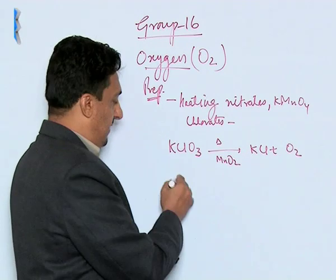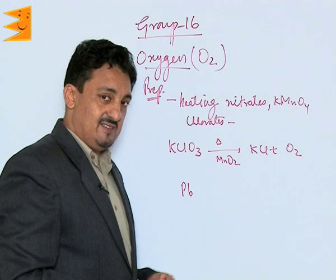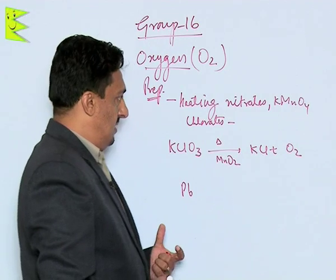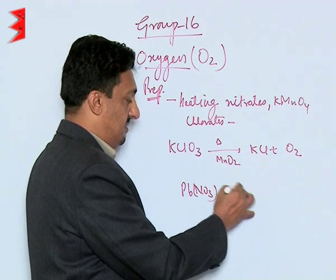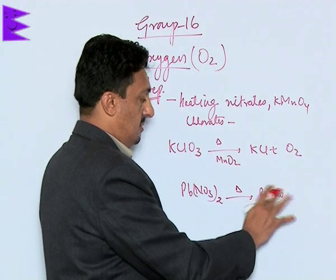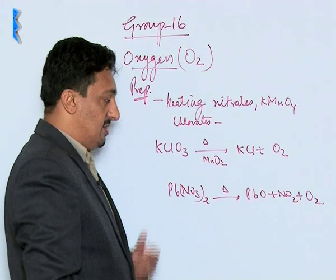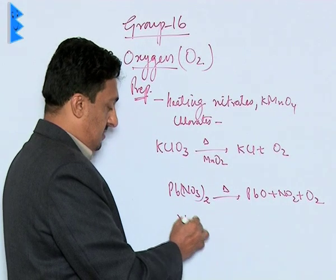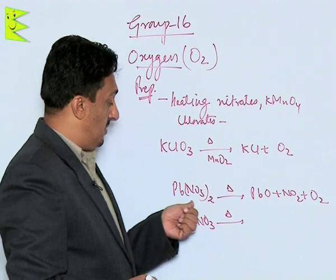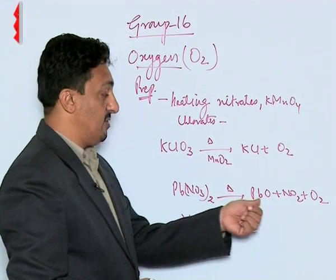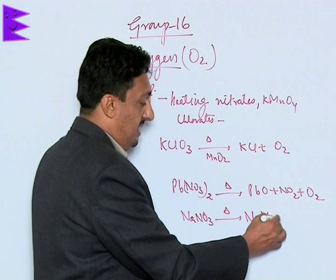In a very similar way, the nitrates of metals whose oxides exist can be heated to give oxygen. The only difference is that nitrates of metals whose oxides exist decompose to give oxides plus NO2, and whose oxides do not exist form nitrite and also release oxygen.